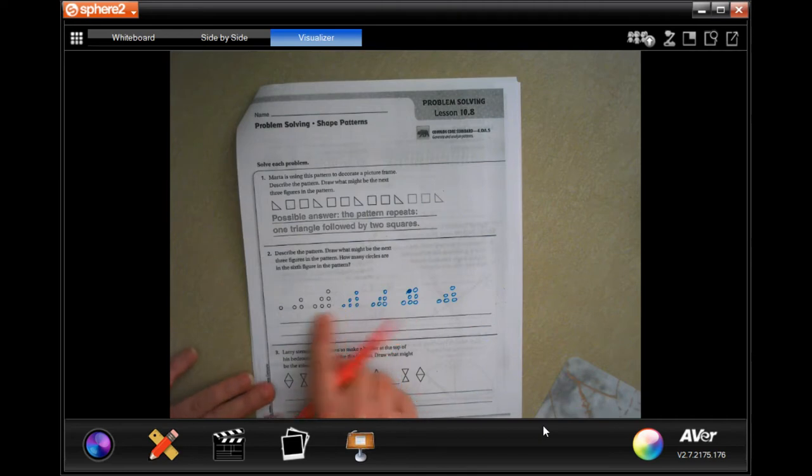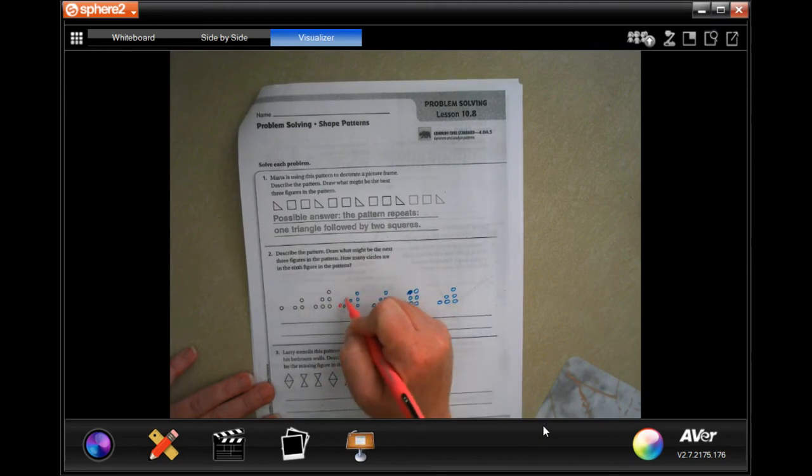So our pattern, you'll see we have one and then we added a row of two and then we added a row of three. So on this one, I'm gonna add a row of four.